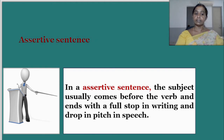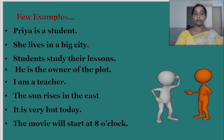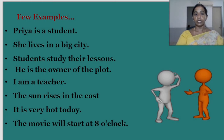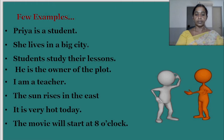Let us understand better with these examples of assertive sentences: 'Priya is a student.' 'She lives in a big city.' 'Students study their lessons.' 'He is the owner of the plot.' 'I am a teacher.' 'The sun rises in the east.' 'It is a very hot day.' 'The movie will start at 8 o'clock.' These are a few examples of assertive sentences.